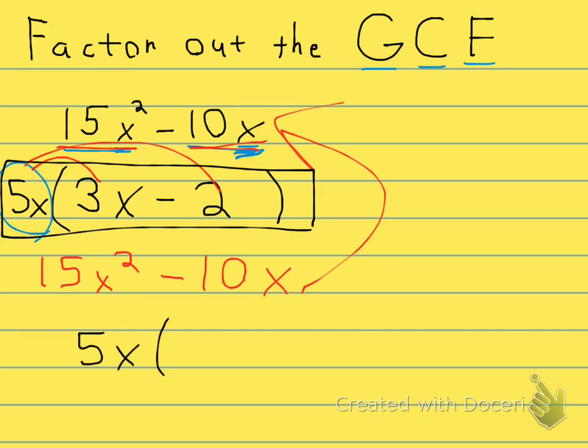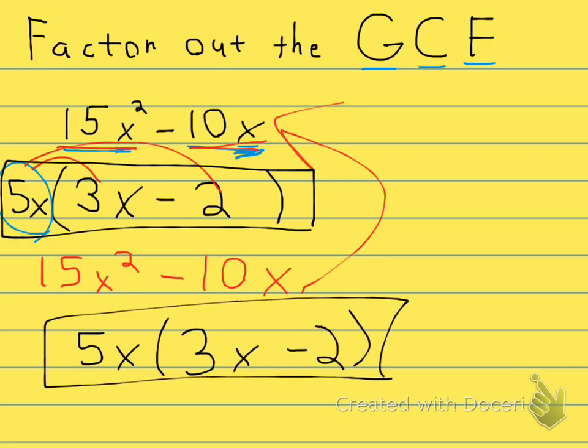Here's the greatest common factor of 5x, and then you write down what's left over after you factor that out. And that's factoring.